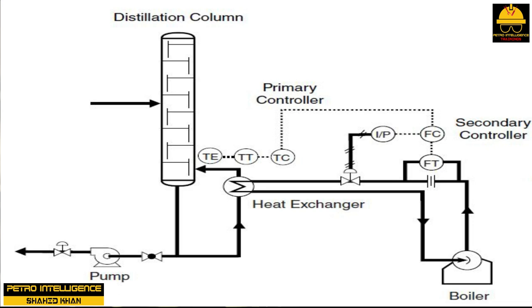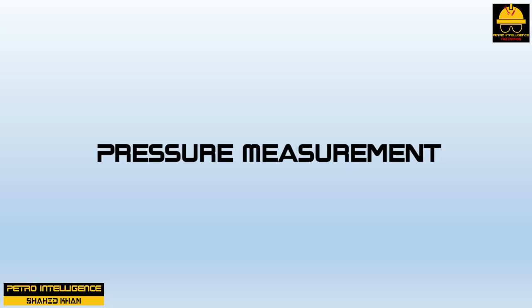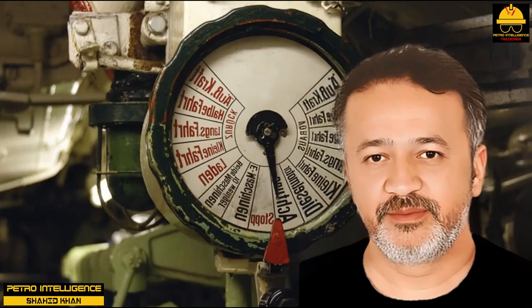Controllers are designed to initiate a change to return a process to a set point if a variance exists; they may be located in the field or in a remote location. The controller sends an electric signal to a transducer, typically located near the valve to eliminate process lag. The transducer converts the electric signal to a pneumatic signal of 3 to 15 PSI. The control valve then opens and closes depending on the signal, reducing or increasing fuel flow to the burners to control temperature.